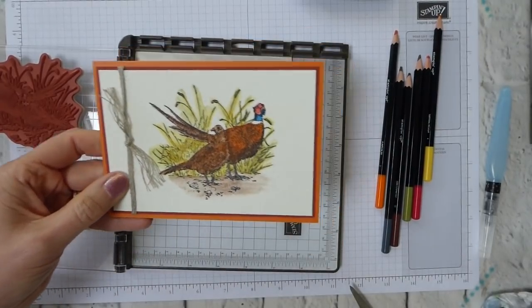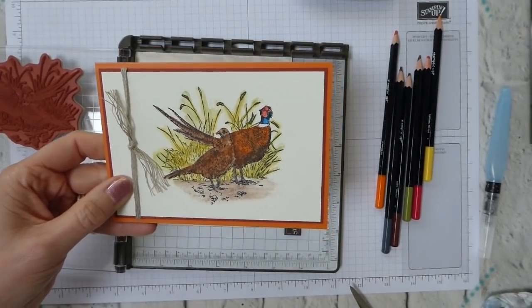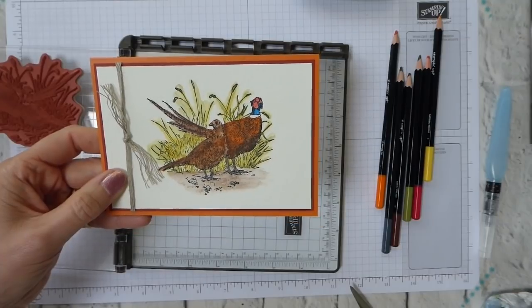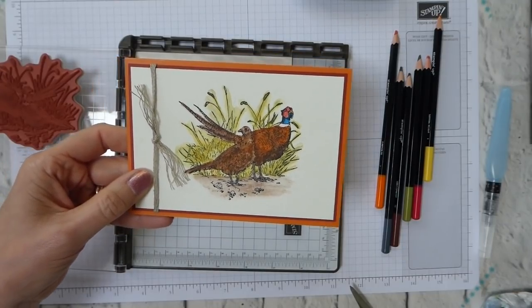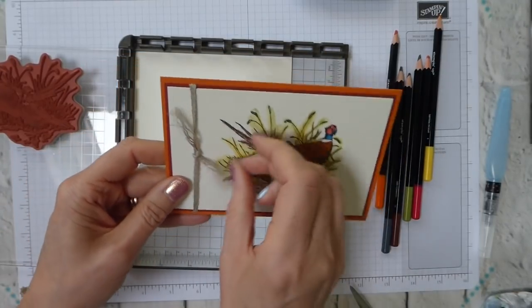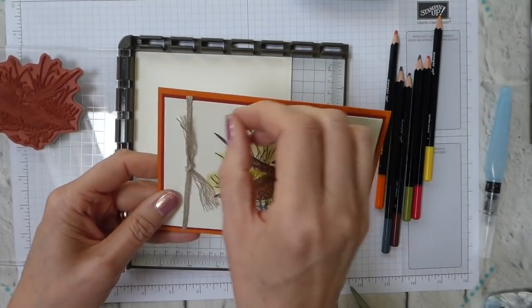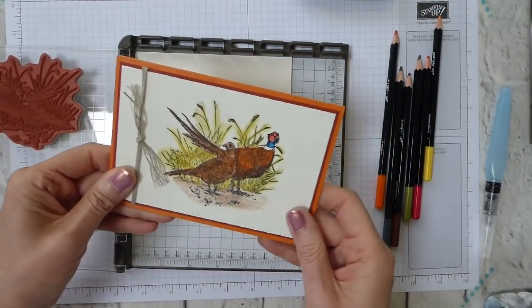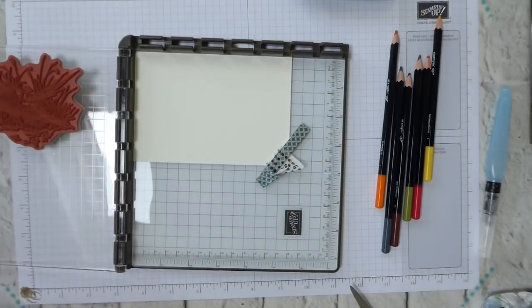I've used the new braided linen trim, which is in the autumn winter catalogue, and just frayed the ends. So I've just done a simple knot round the mat, but we'll come to that in a moment.